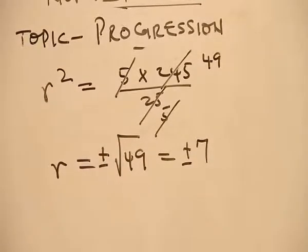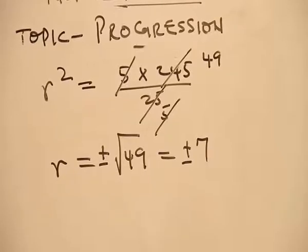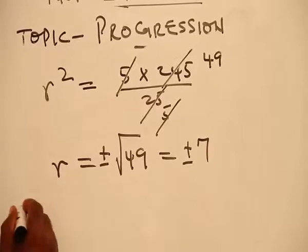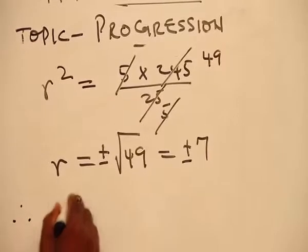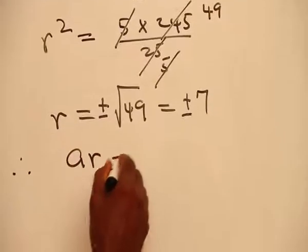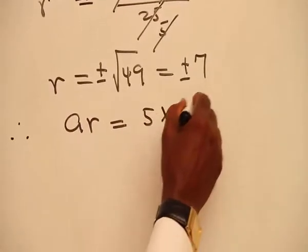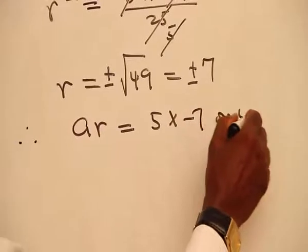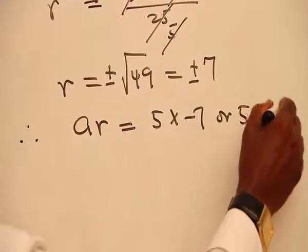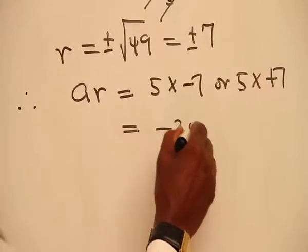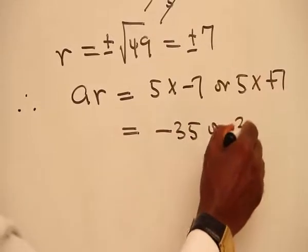Let's remind ourselves that we are told to find two possible values for the middle number. So therefore, the middle number Ar will be equal to 5 times minus 7 or 5 times plus 7, which should give you minus 35 or 35.